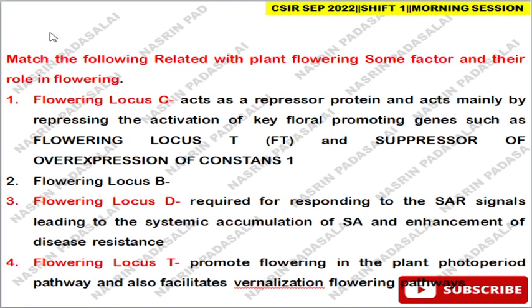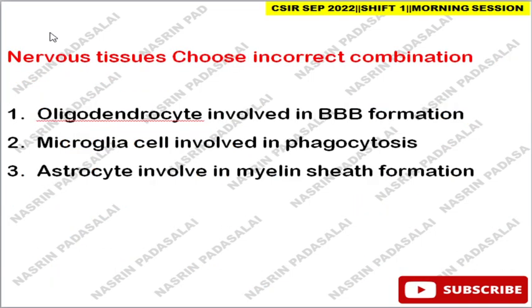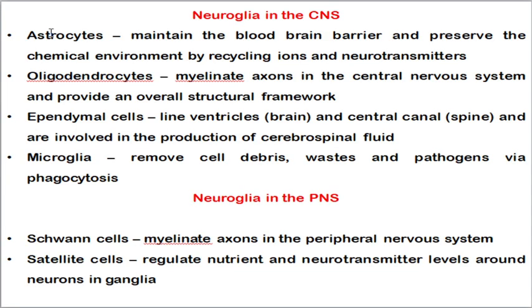The next question is about plant flowering locus genes. Flowering Locus C (FLC) acts as a repressor protein, mainly repressing the activity of Flowering Locus T (FT) and the Suppressor of Overexpression of Constans (SOC). Flowering Locus D (FLD) is required for the systemic acquired resistance response, leading to systemic accumulation of salicylic acid and enhancement of disease resistance. Flowering Locus T (FT) promotes flowering via the photoperiod pathway and also promotes vernalization.